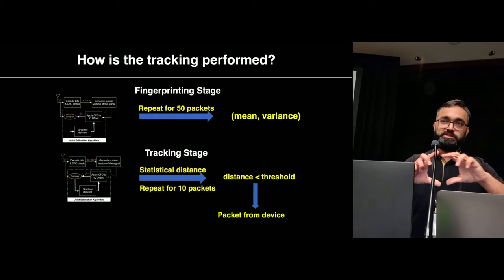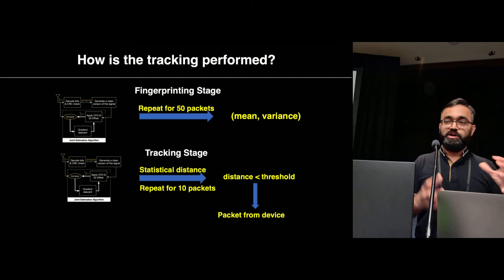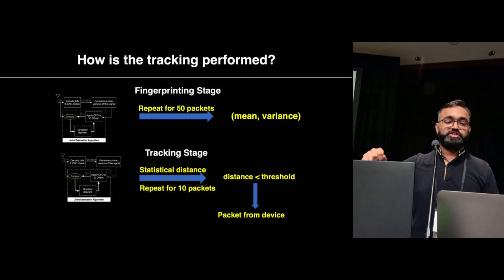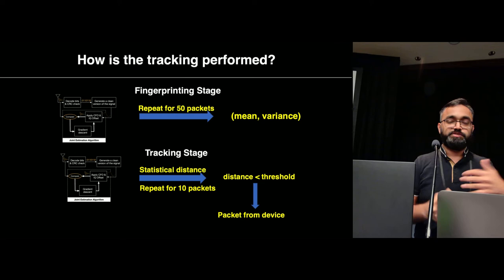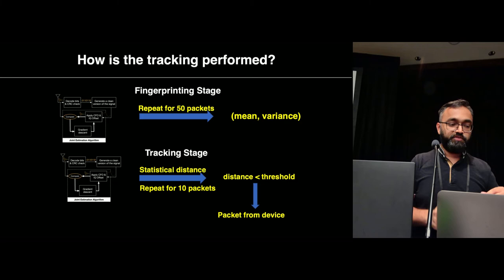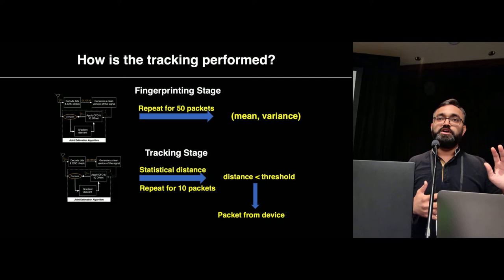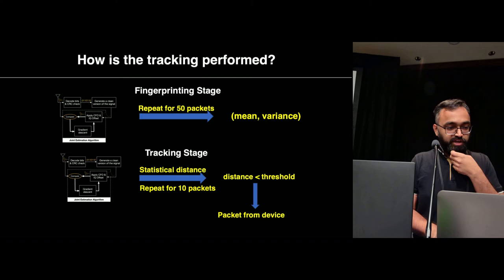With all these challenges in mind, the big question is: how successful can an attacker be in the real world? Before getting into that, here is what our tracking algorithm does: we estimate the hardware imperfections, then in the fingerprinting stage we use 50 packets per device to get a distribution. For any unknown incoming packet, we calculate the statistical distance relative to this distribution, and if it is within a certain threshold, we classify it as coming from that device. Ten packets are used for tracking queries. These numbers are not arbitrary — detailed experiments in the paper show they yield the best accuracy with the fewest packets.